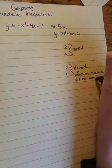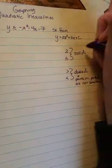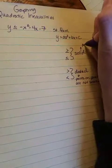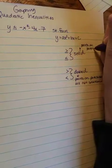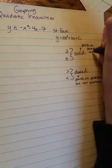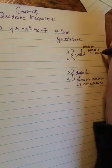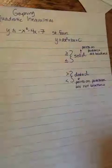And if it's solid, that means points on the parabola are solutions. And what are they solutions to? To the inequality that I gave you.